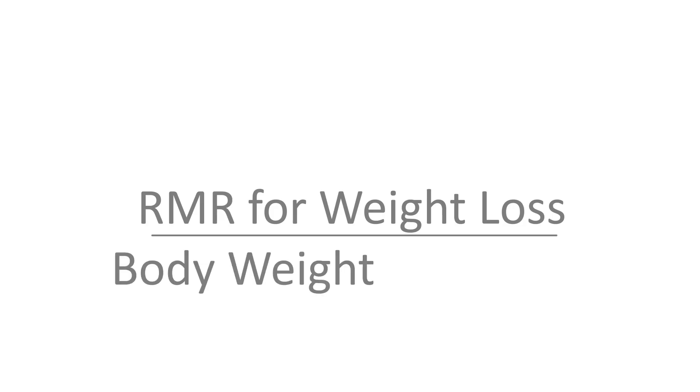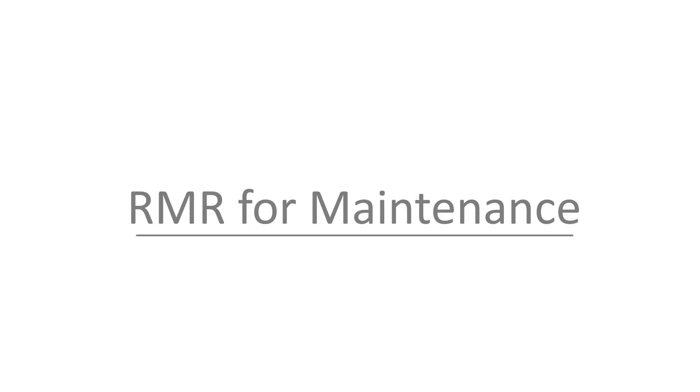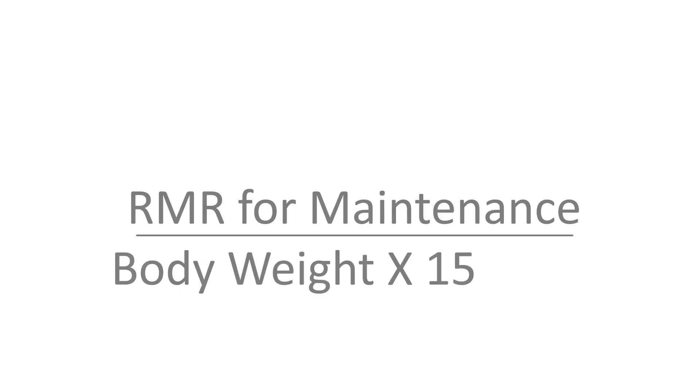If you take your body weight and multiply your body weight by 12 or 13, you'll get a good number that tells you how many calories you want to consume if you'd like to lose weight. If you're more interested in maintaining weight, a simple formula is body weight times 15 or 16. Either of these numbers is going to give you a good idea of what you want to consume if you want to either maintain or lose weight.